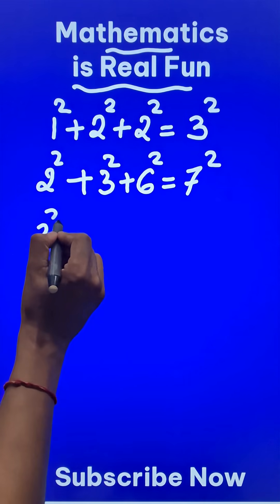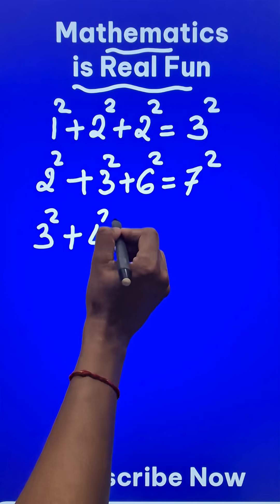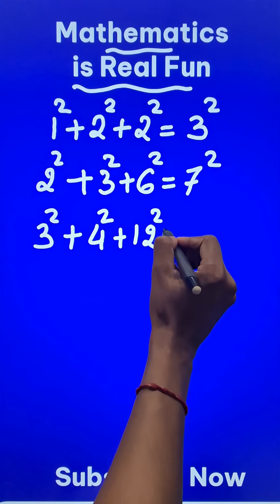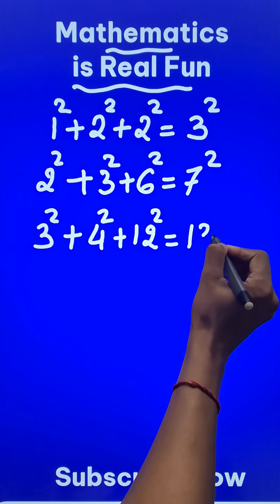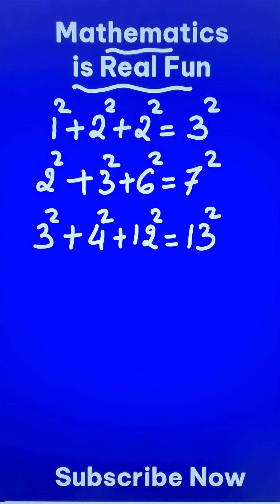If not, observe the third one. 3 square plus 4 square plus 12 square gives us exactly 13 square. And now can you find a pattern?